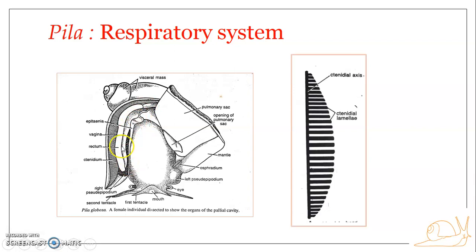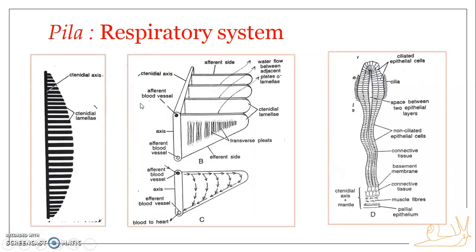The epithenia is a longitudinal ridge which divides the mantle cavity into the branchial chamber and the pulmonary chamber. The ctenidium or gill is present along the dorso-lateral wall — the roof — of the branchial cavity. The ctenidium consists of a long axis known as the ctenidial axis, which is the part that remains attached to the mantle wall.